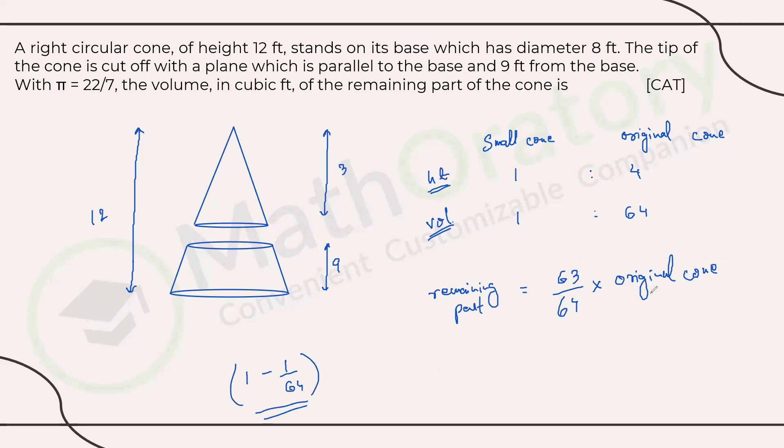Now, just put the values here, we are looking for original cone, so the volume of a cone is what? It's one third of the volume of a corresponding cylinder, right? So one third of pi r square h, so we have 63 by 64 times 1 by 3, pi is supposed to be taken as 22 by 7 for this into r square. Now, r is the radius of the base, right? So diameter is 8 feet, so the radius will be 4. So 4 square is 16 into the height, which is 12 feet.